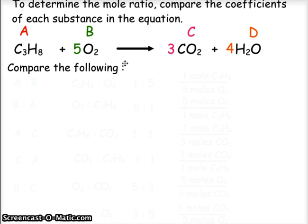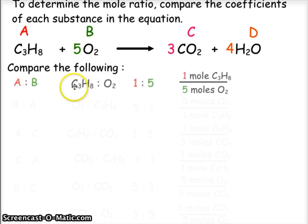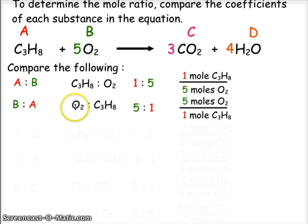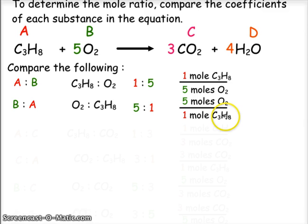What is the conversion factor and mole ratio for A to B? A to B is a comparison of propane to oxygen — a one-to-five ratio — so the conversion factor is one mole of propane over five moles of oxygen. Comparing B to A — oxygen (O2) to propane (C3H8) — gives a five-to-one ratio, with a conversion factor of five moles of oxygen to one mole of propane.